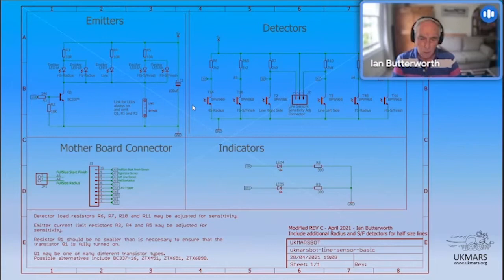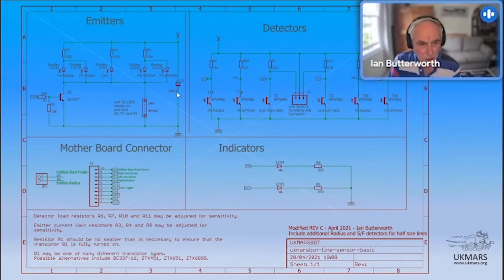But fortunately, the line sensor board doesn't use all the available IO on UK Mars bot. We do actually have two spare analog lines in that we're not using. So this is a modified schematic from the UK Mars bot line board. And I'll just take you through the different changes on here. I hope you can see my mouse moving around. But basically, up in the emitter section in the top left-hand corner here, add two more emitters.